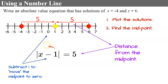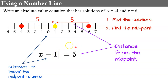Let's verify. If I evaluate negative 4: negative 4 subtract 1 is negative 5, and the absolute value of negative 5 is 5. It checks. Now let's check 6: 6 subtract 1 is 5, and the absolute value of 5 is 5. It checks. So my equation is the absolute value of x minus 1 equals 5.